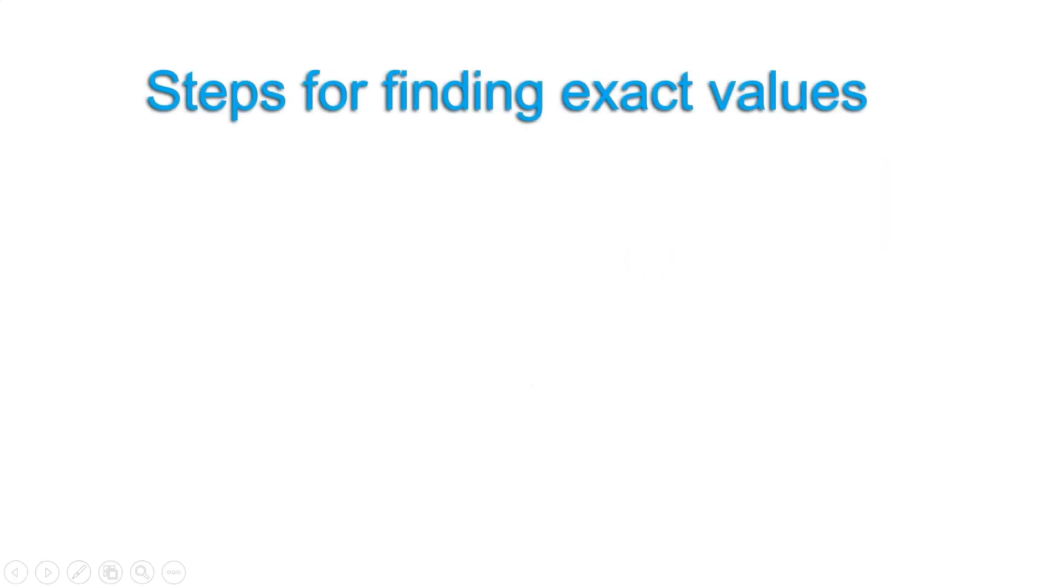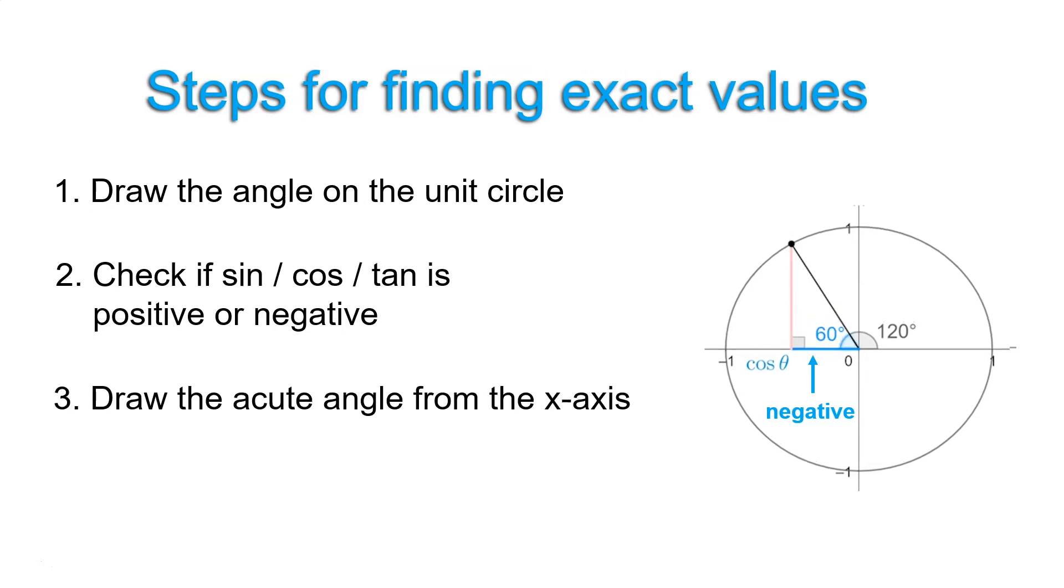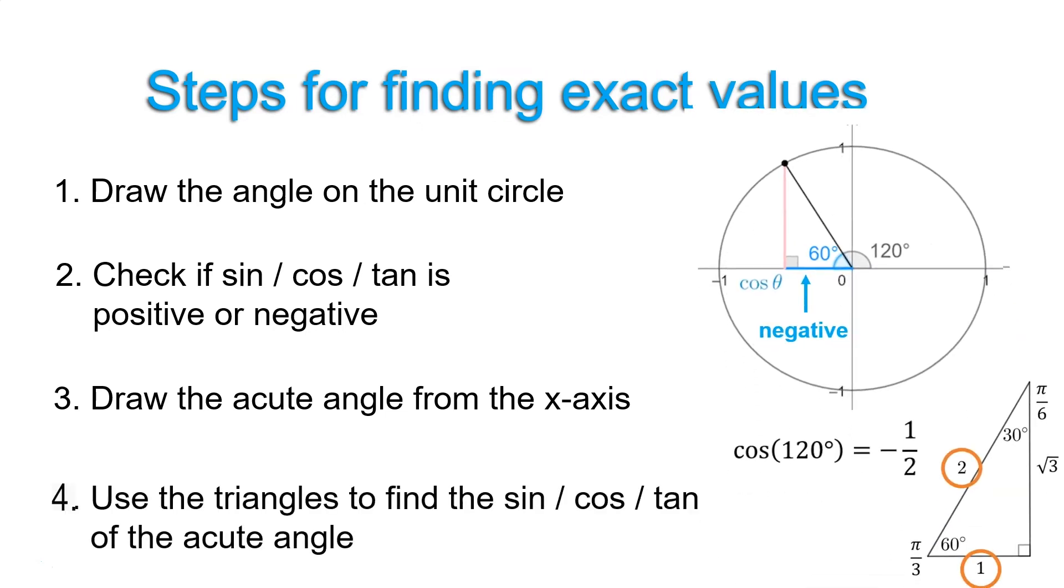So here's the process for these obtuse or reflex angles. Step 1, draw the angle. Step 2, check whether sine, cos or tan will be positive or negative. Step 3, draw the acute angle from the x-axis. And that will help with step 4, to know which angle to use from our exact value triangles, to work out the actual size of the angle.